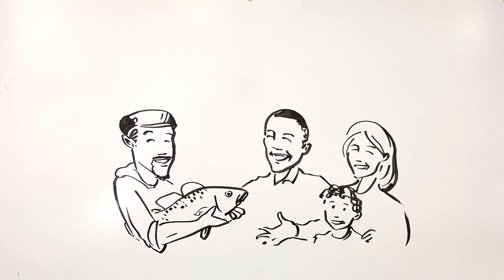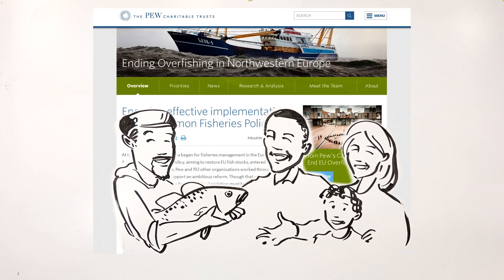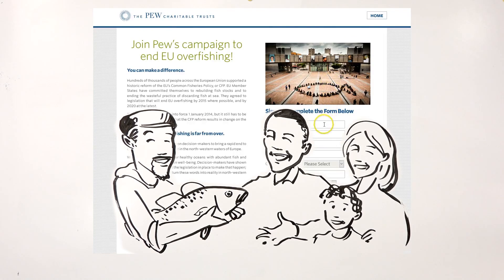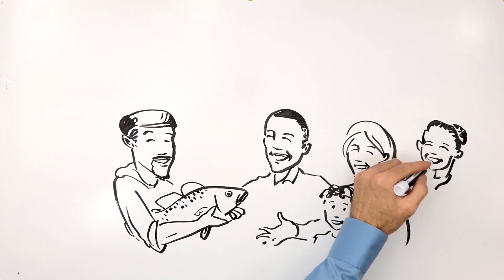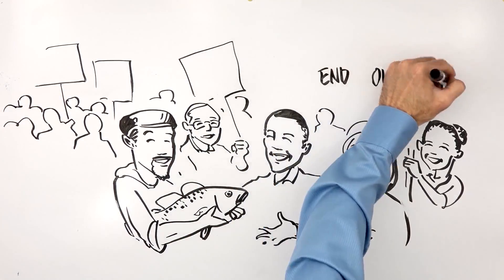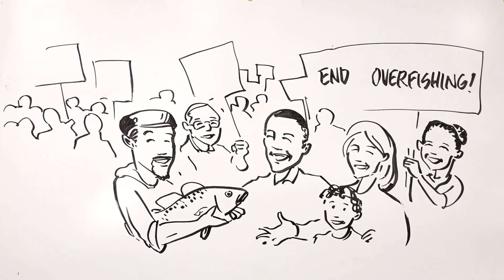Here is where you come in. Sign up to receive the newsletter from the Pew Charitable Trust's campaign to end overfishing in the EU. As part of the campaign, you can participate in online actions pressuring your minister to make the right decisions for the fish, the fishermen and the future.